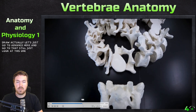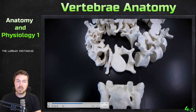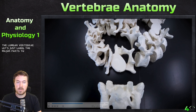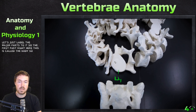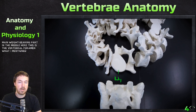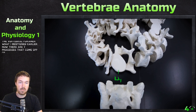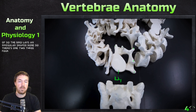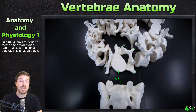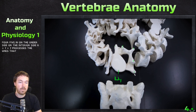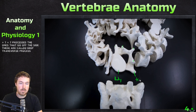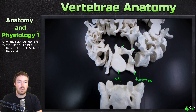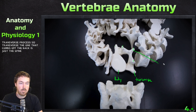So this is a lumbar vertebrae — let's label the major parts. The first part right here is called the body — it's the main weight-bearing part. In the middle here is the vertebral foramen, which I mentioned earlier. Now there are seven processes that come off of the vertebrae — it's an irregularly shaped bone. The ones that go off the sides are called the transverse processes. The one that comes off the back is the spinous process.